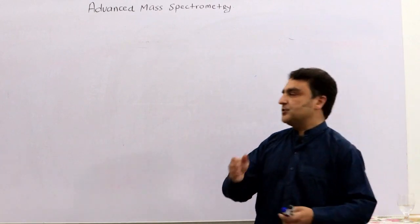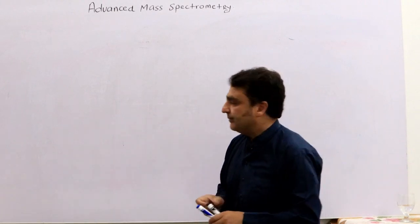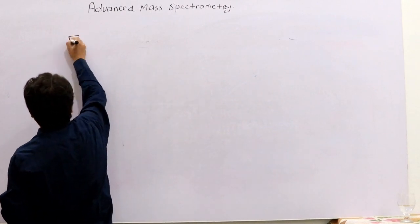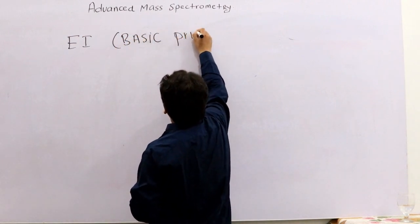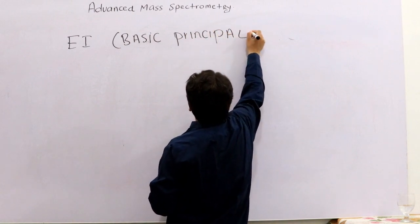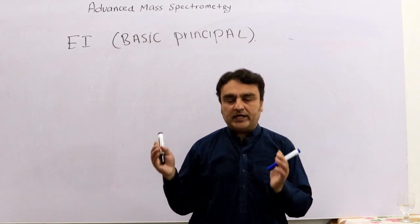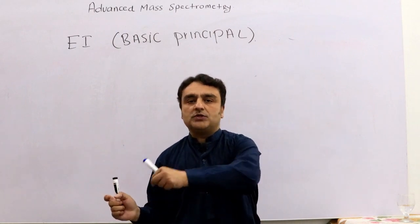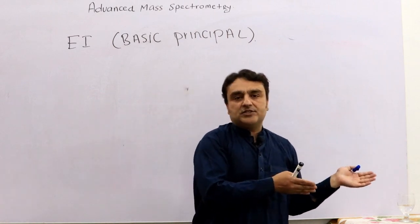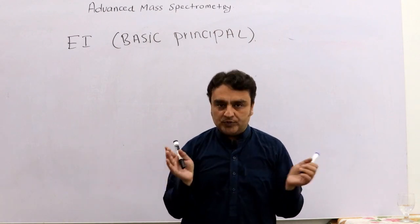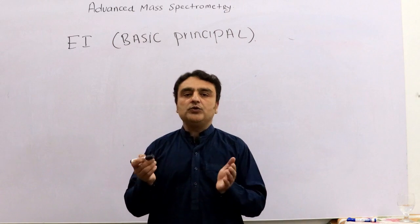Now let's move to the basic principle of electron ionization mass spectrometry. Almost all mass spectrometry techniques share the same basic principles. The basic principle means that first you need to isolate a single compound or molecule. For example, if you have water molecules, you isolate one from the rest and detect it — that is essentially what mass spectrometry does.